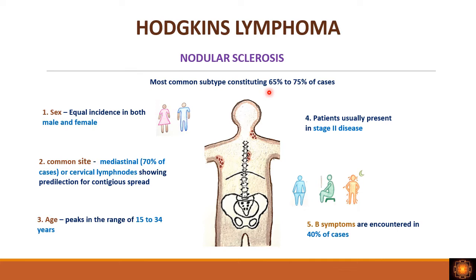The first individual type is nodular sclerosis — the most common subtype, comprising 65 to 75 percent of cases. Both males and females are equally affected. The most common site of involvement is mediastinal, or it can be cervical. Patients usually present at stage 2 disease — meaning involvement of lymph nodes on the same side of the diaphragm. The peak age is 15 to 34 years. B symptoms are present in 40 percent of cases.